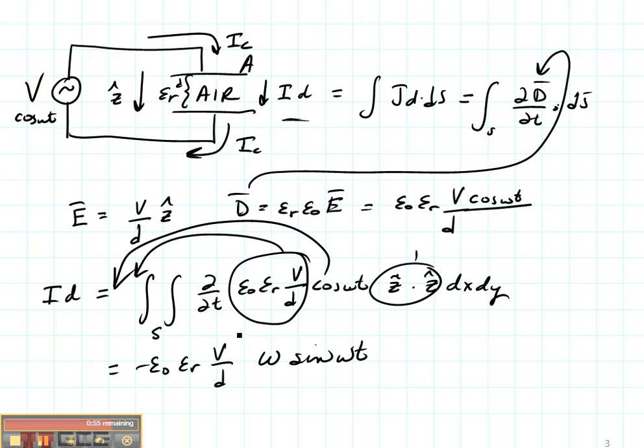And then when I do this surface integral right here, I'm going to get the area of the plates. Now would it have mattered if my plates had been round instead of square? The answer is no, because this surface integral would still have given me the total area of the plate. Now let's take a look and see if that is consistent with the capacitive current that we would expect.